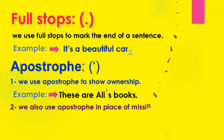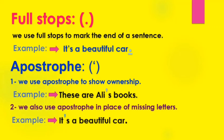Number two: we also use apostrophe in place of missing letters — نستخدم الفاصلة العلوية بدلاً من الأحرف المفقودة. For example: 'It's a beautiful car.' Here we use apostrophe because the letter I is missing. Originally it is 'It is,' but we contracted it by removing the letter I and adding an apostrophe — حذفنا حرف الـ I ووضعنا الفاصلة العلوية.